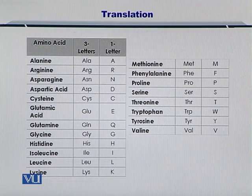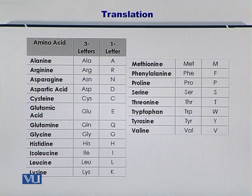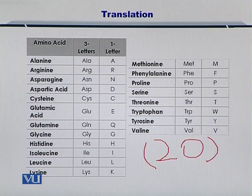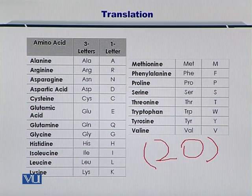Various amino acids can be encoded in this process, and 20 of them are listed here. These amino acids include alanine, arginine, asparagine, aspartic acid, cysteine, glutamic acid, and glutamine.